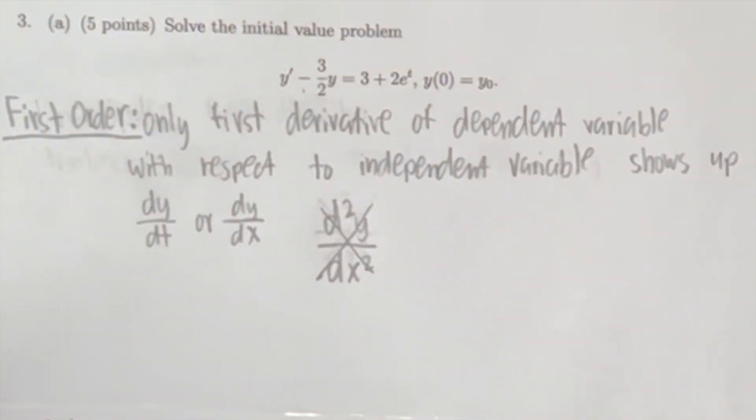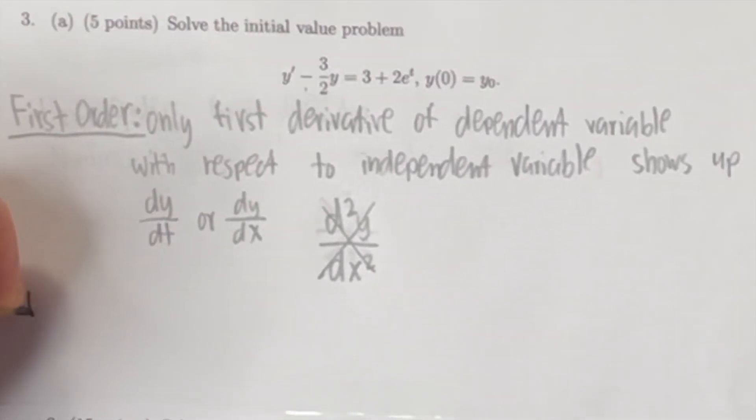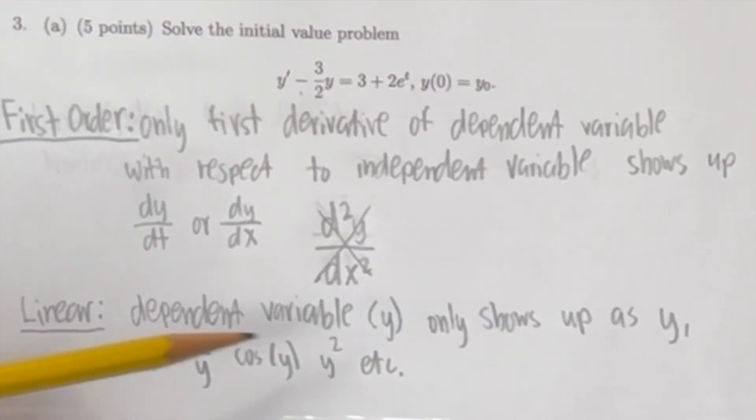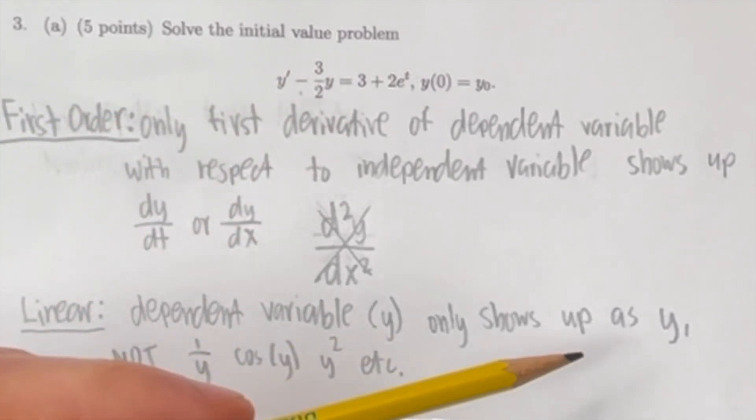The second thing that we must make sure of is that the differential equation in the problem is linear. This means that the dependent variable, in this case y, only shows up as y, not as 1/y, cos(y), y², etc.